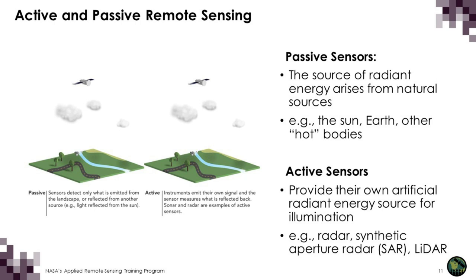There are two main types of remote sensing observations: passive and active. Passive microwave sensors are called radiometers — they measure energy emitted from a medium in the microwave range. Active sensors provide their own illumination source. A radar is an active sensor: the instrument emits a burst of energy, and that same instrument measures the portion of the signal that is reflected back. Active remote sensing in the microwave range is called radar remote sensing.